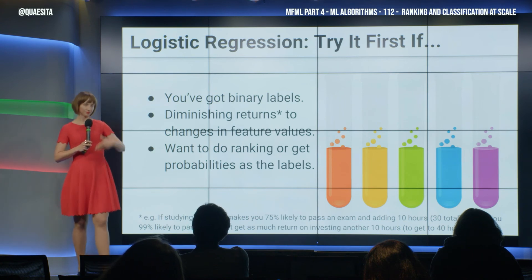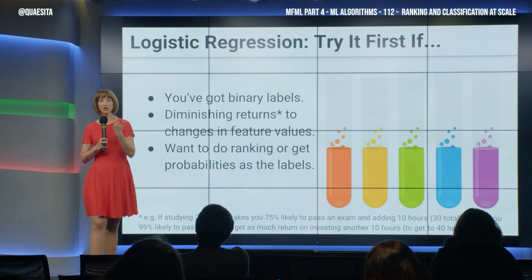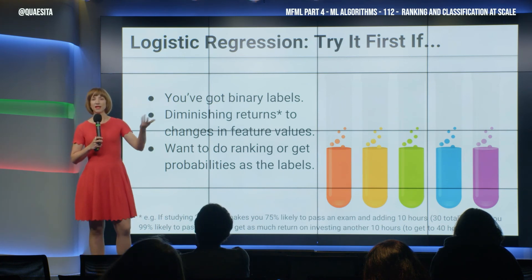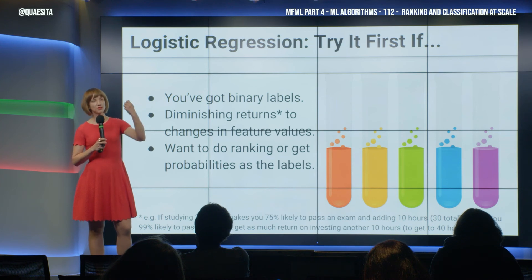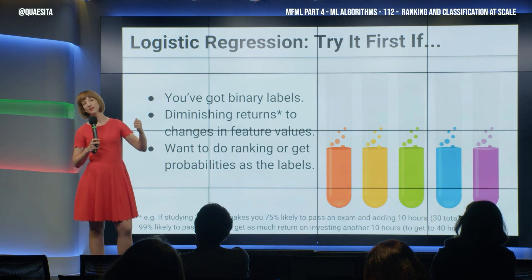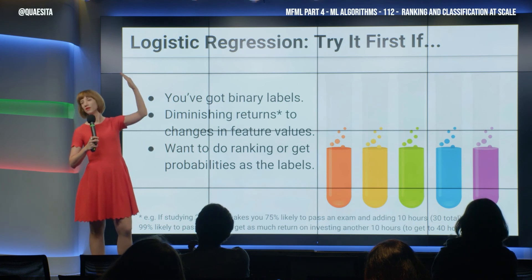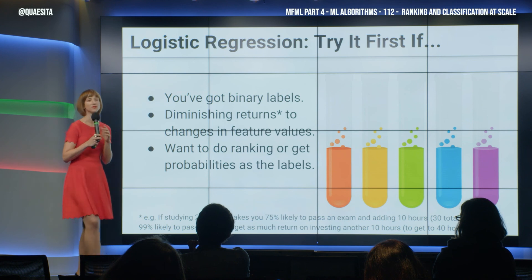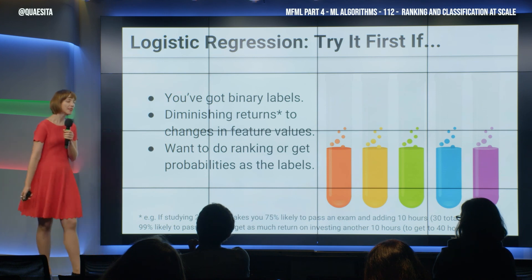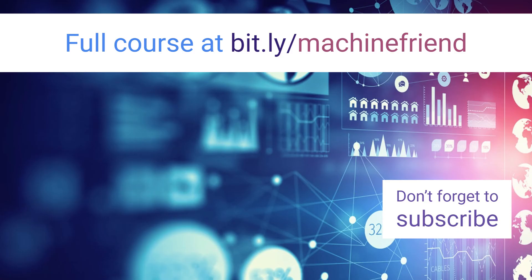For example, if you want to serve the user the song they are most likely to listen to next, for each song you predict the probability that they are going to interact with it. Then you can order them by the probability results — that's one simple way to do ranking.